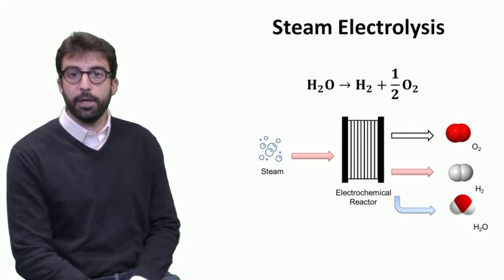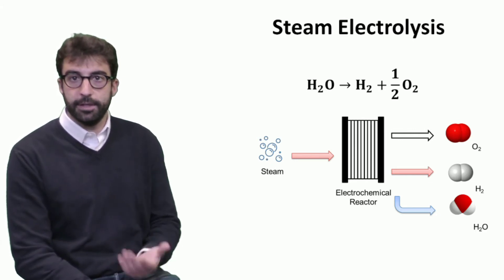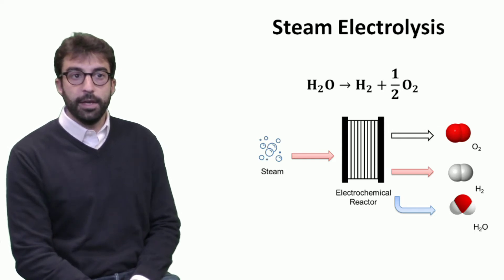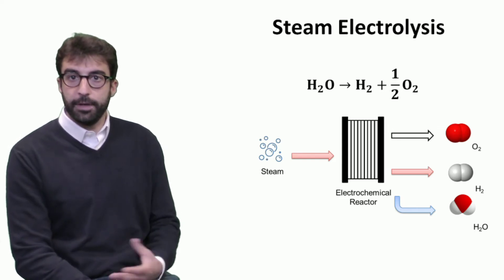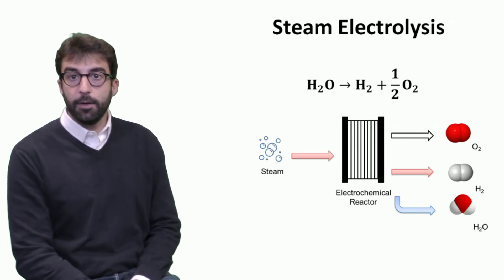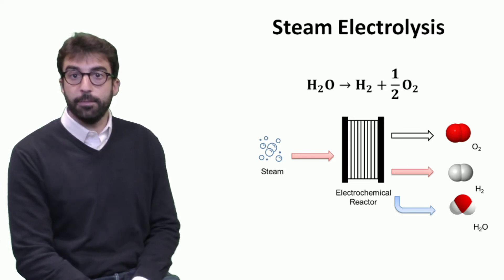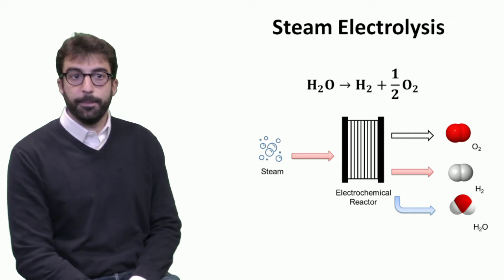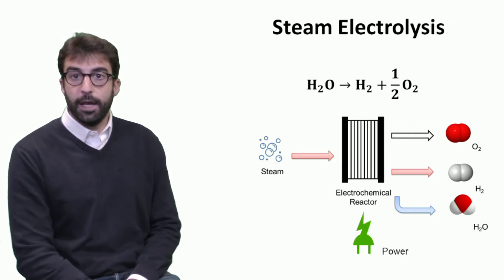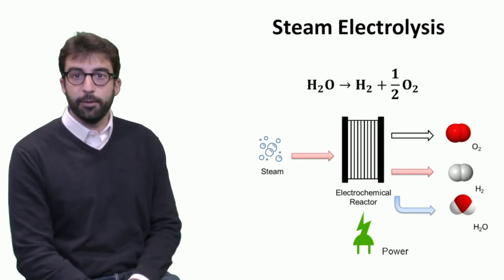What we have is an electrochemical reactor that performs steam electrolysis. The inlet to the unit is steam, and the three main outlets are oxygen, hydrogen, and we may have some steam that didn't complete the reaction. Of course everything has to be fed with electrical power — ideally green energy.